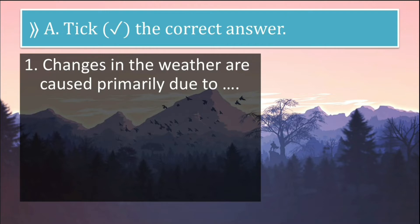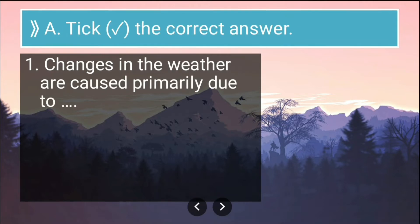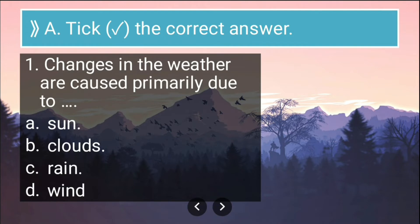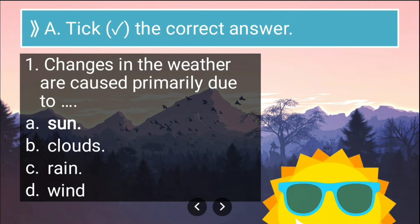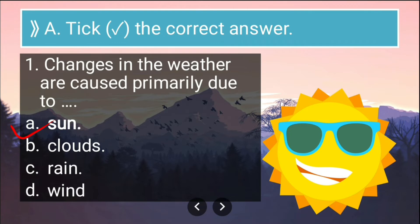The first question is: changes in the weather are caused primarily due to — and the options are Sun, clouds, rain, wind. The correct answer is Sun, because most of the factors that affect the weather are directly or indirectly related to the Sun. So the Sun is the primary reason for changes in weather.